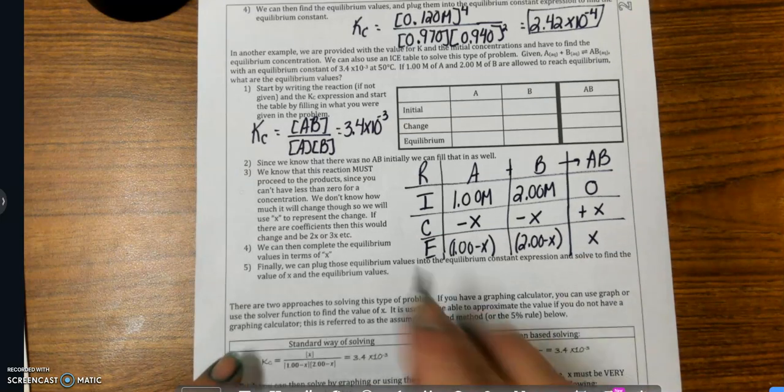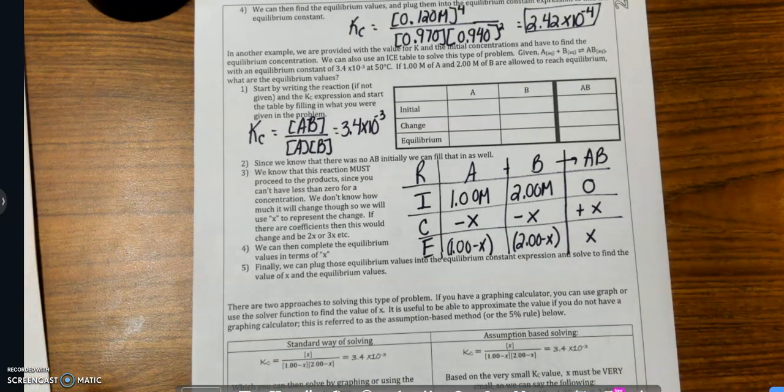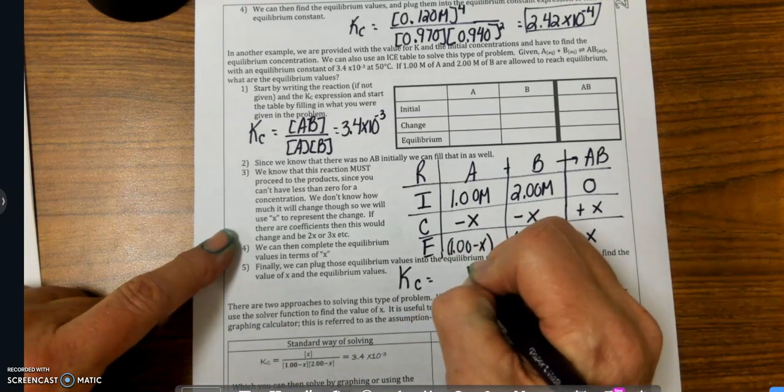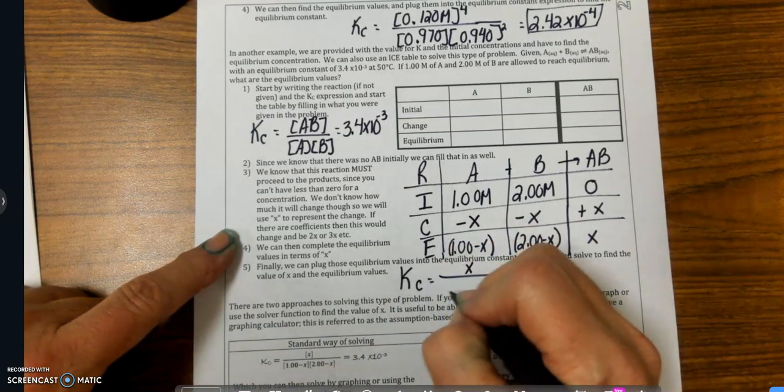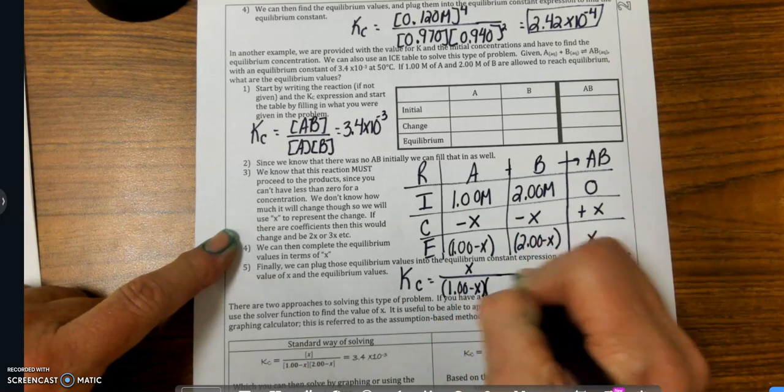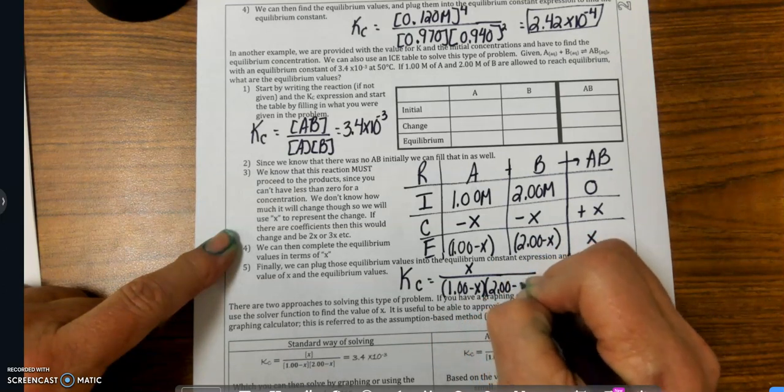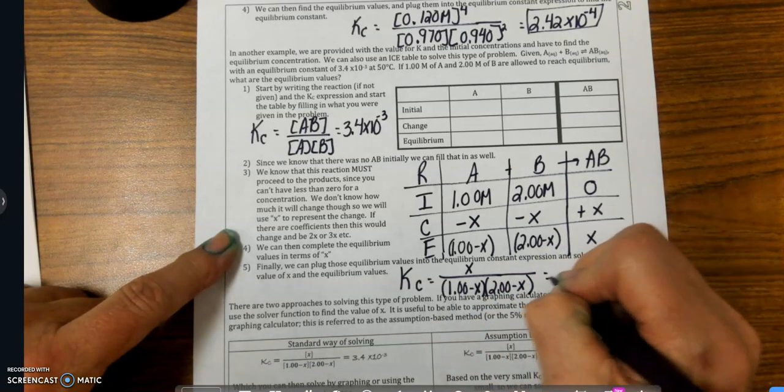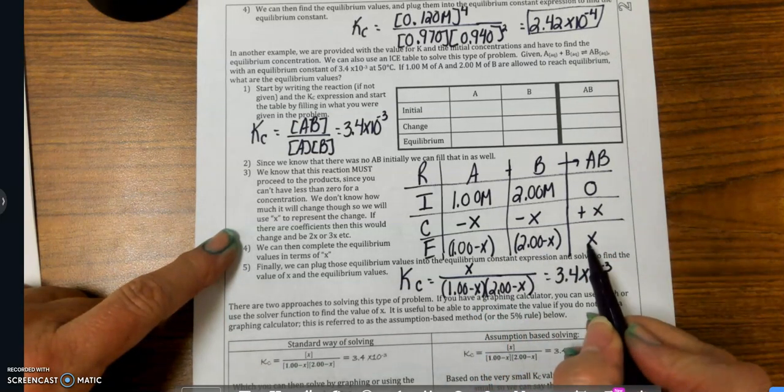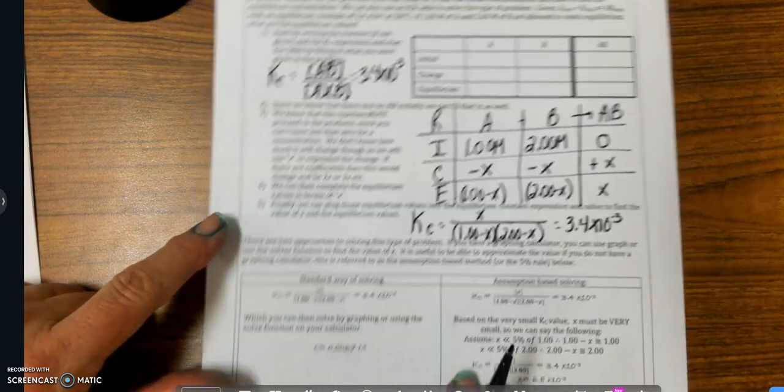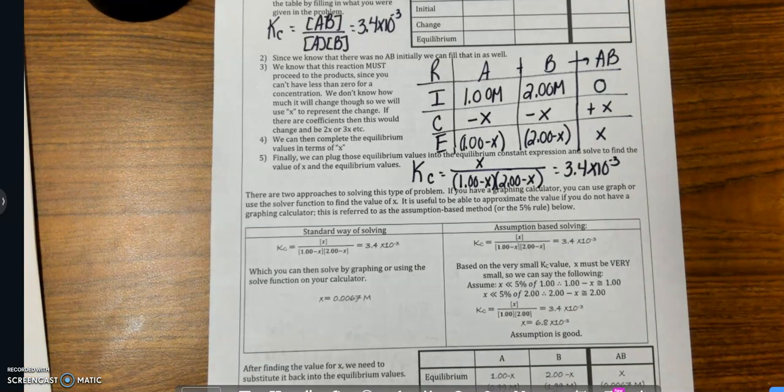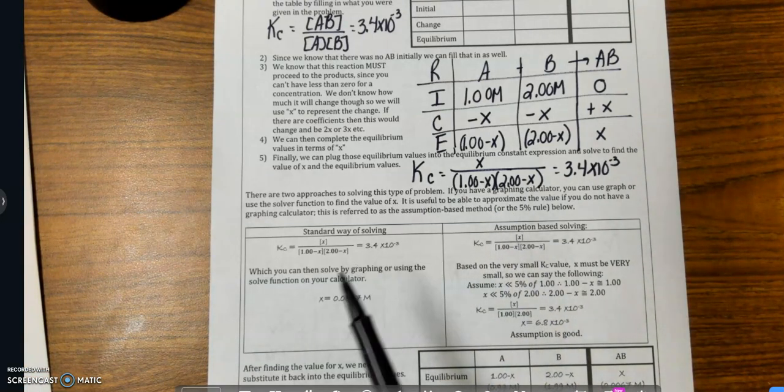Now, let's plug all this in, because that's all the information I have. So KC is X divided by 1 minus X times 2 minus X, which is equal to 3.4 times 10 to the minus 3. All I did is I put these in to this expression. Now, if you have a graphing calculator, which you are allowed to use on the AP test, you can plug this in. However...